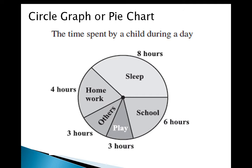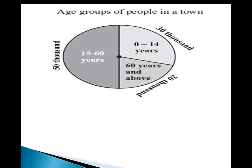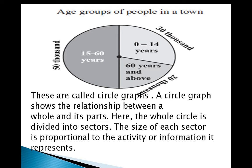As like that, any data we can arrange in a circle. This is another circle chart or pie chart showing the age group of people in a town. From this chart you can easily tell me that there are 50,000 people having an age group of 15 to 16 years. As compared to other graphs, the circle graph is easy for reading, so these are called circle graphs.